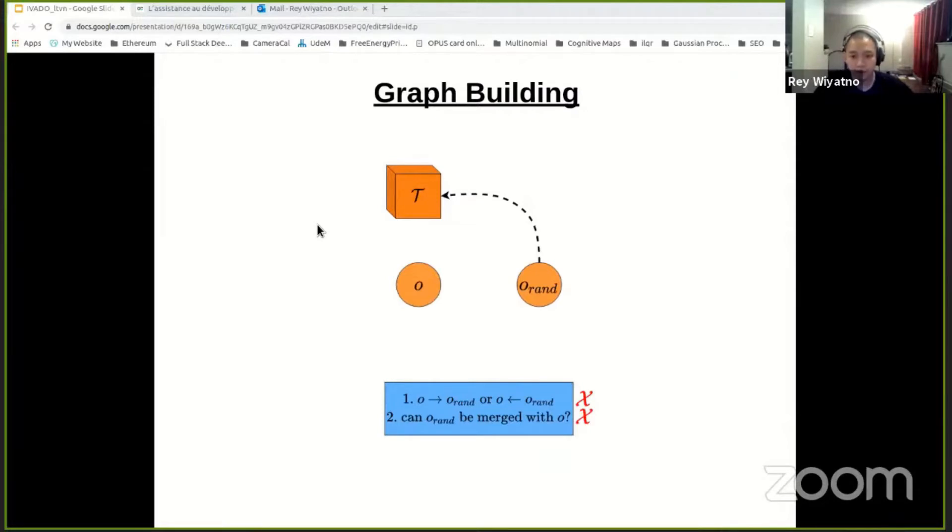And if the answer is no to both of these questions, then we return back to tau, the trajectory images, so that it can be resampled again in the future iterations. We then repeat this process until there's no more node in tau that can be added to the graph.